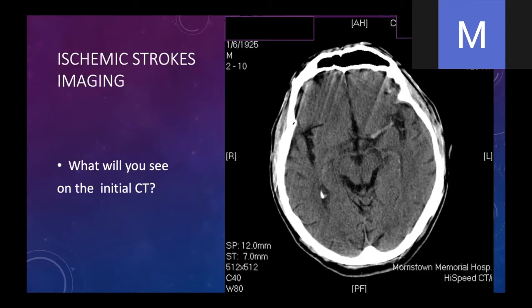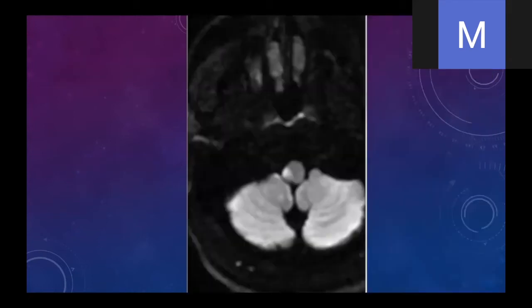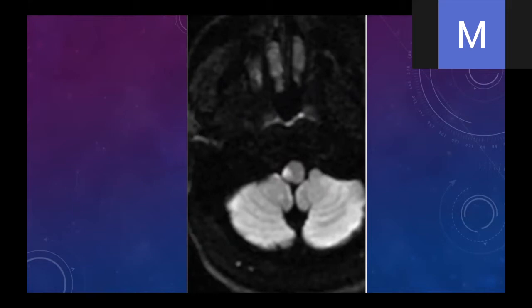Non-contrast CT is the study of choice initially. In certain cases, you're going to have to do advanced imaging. This patient had an MRI done — it's a delayed presentation with a small area of infarct in the medullary area, a lateral medullary infarct or Wallenberg syndrome. This patient presented with dizziness to an urgent care center and was treated as a sinus infection, but it turned out the patient had had a stroke. If this patient had come to the emergency room within the three to four-and-a-half hour window, he probably would have been a good candidate for thrombolytics. Posterior fossa infarcts actually do fairly well with thrombolytics.